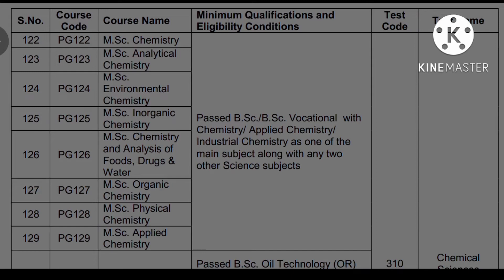And next, MSc Organic Chemistry — the course code is PC-127. PC-128 is MSc Physical Chemistry. PC-129 is MSc Applied Chemistry. The minimum qualification is a pass BSc or BSc Vocational with Chemistry, Applied Chemistry, or Industrial Chemistry as one of the main subjects, along with any two other science subjects.